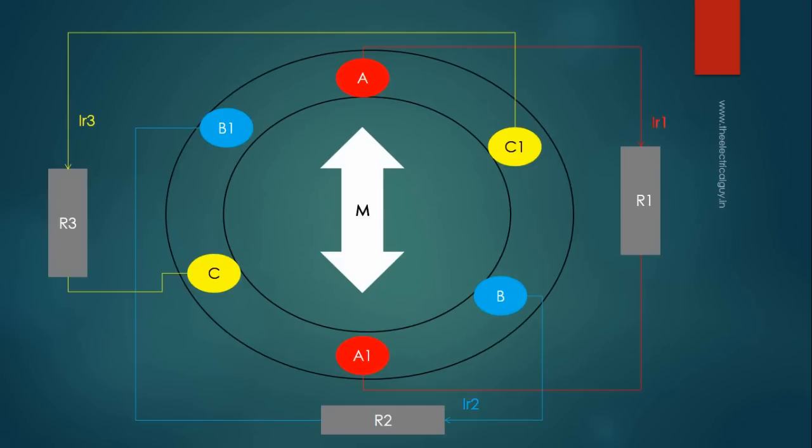Now let me connect identical resistors across all the three windings. Current IR1, IR2 and IR3 will start flowing through resistors. These currents are in phase with their respective voltage and hence, they are also out of phase with each other by 120 degrees.